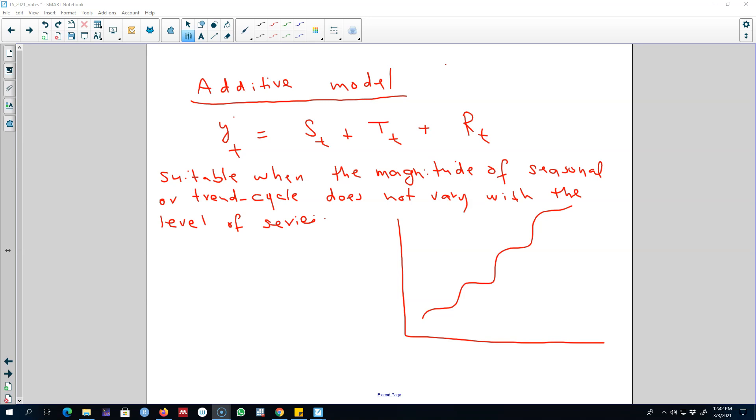The first method that we can use to decompose our series into those three components is called the additive model. That is, all those three components enter additively in the model. The additive model is used for data or a time series if the magnitude of the seasonal or trend-cycle does not vary with the level of series.